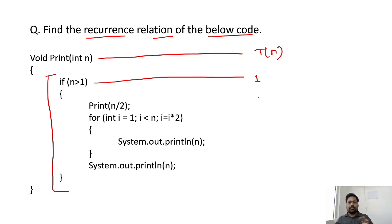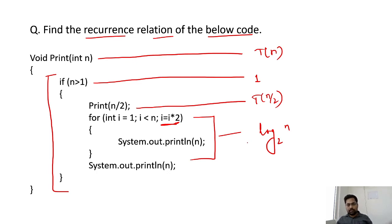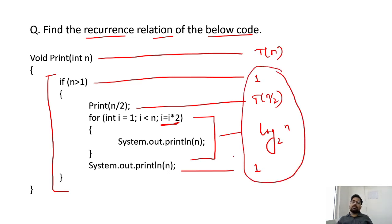If a condition is running for one time — yes or no — we use 1. For print n/2, we write T(n) as T(n/2). As per the iteration method, i is getting multiplied by 2 repeatedly up to n times, so we get log base 2 of n. The total combination gives us T(n), which is why whatever code we are writing, we add it together to find T(n).